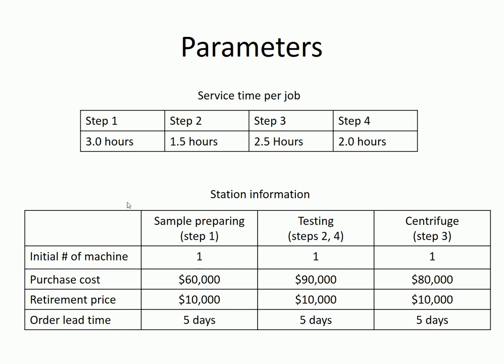You currently have one machine in every station. You are also given the purchase cost — that's the cost to add one machine — and also the retirement price, which is the amount of money you collect by selling a machine. You need to maintain at least one machine in every station.